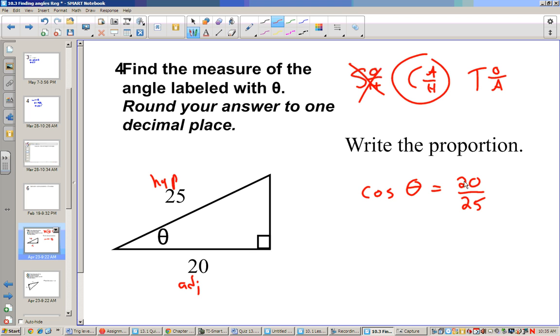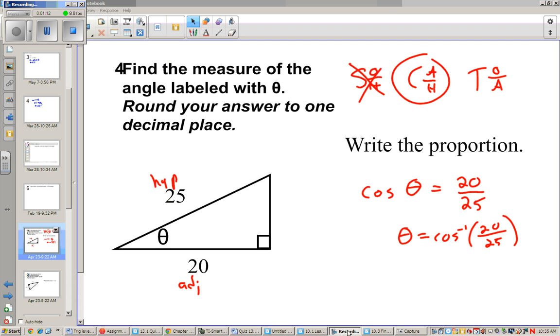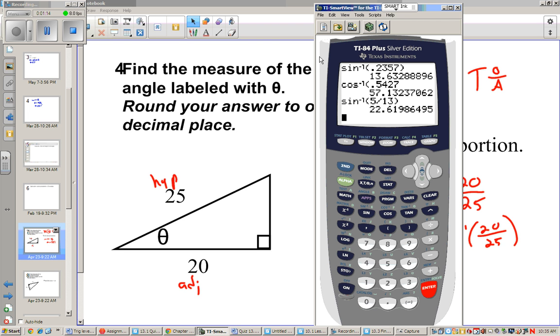There's two things we can do. We could turn this into a fraction, or we could just plug it into our calculator as the inverse cosine. Now remember here, to find our angle, we have to take the inverse cosine of both sides to figure out what this is. So I'm going to go to my calculator. The inverse cosine of 20 over 25 gives us the answer of 36.87.